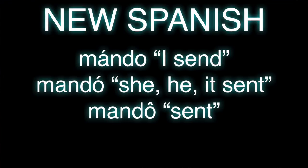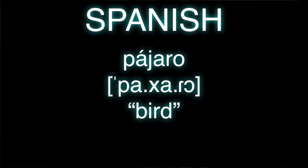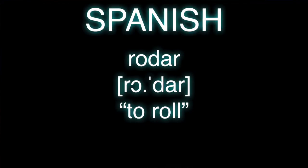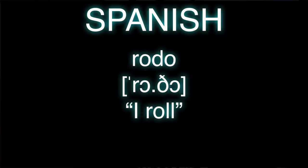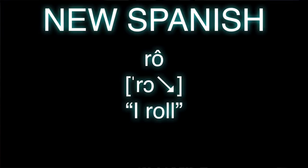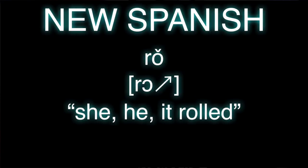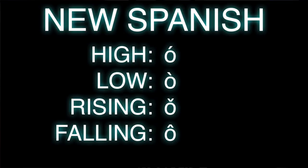You can also get tone in other places. For example, let's say you have pájaro, the word for bird. You get rid of that intervocalic consonant, and now you're left with pájaro with a falling tone on the first syllable. Then with a verb like rodar, 'to roll', the first person singular goes from rodo to ro, and the third person singular preterite also goes from rodó to ro. Now you've got two level tones — high and low — and two contour tones — rising and falling.